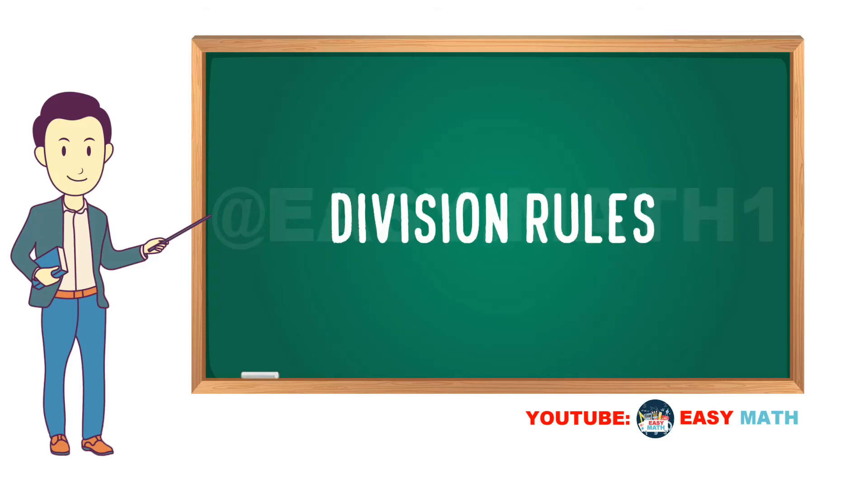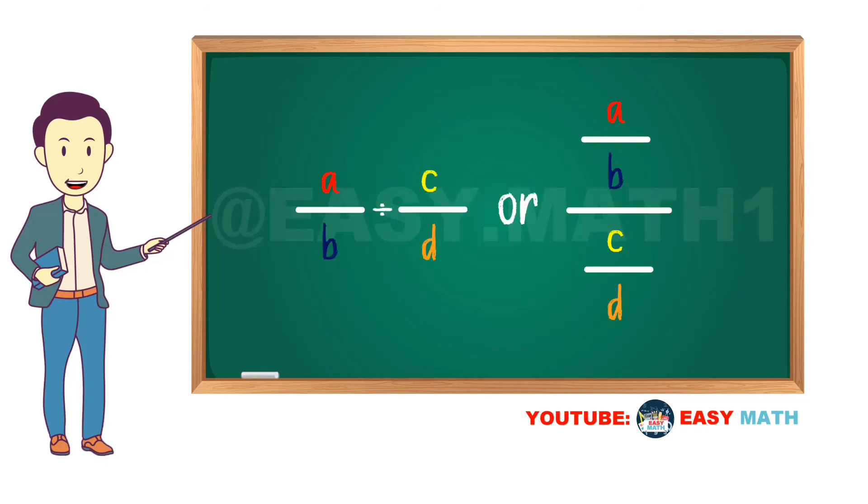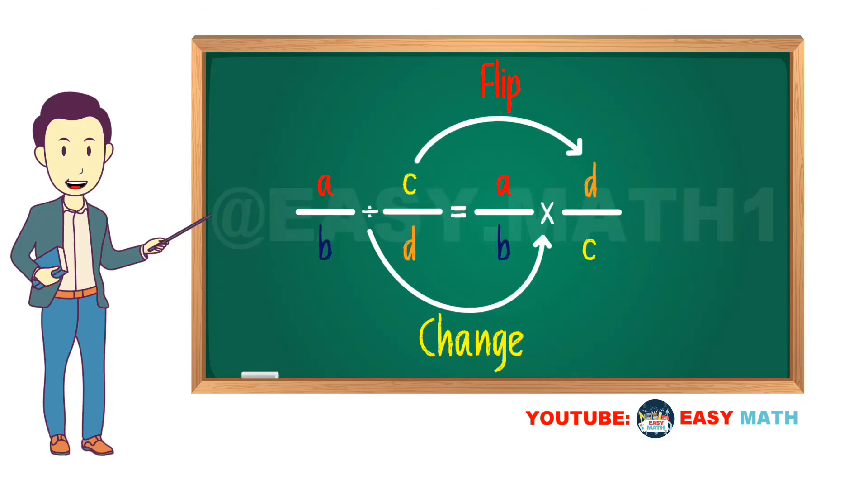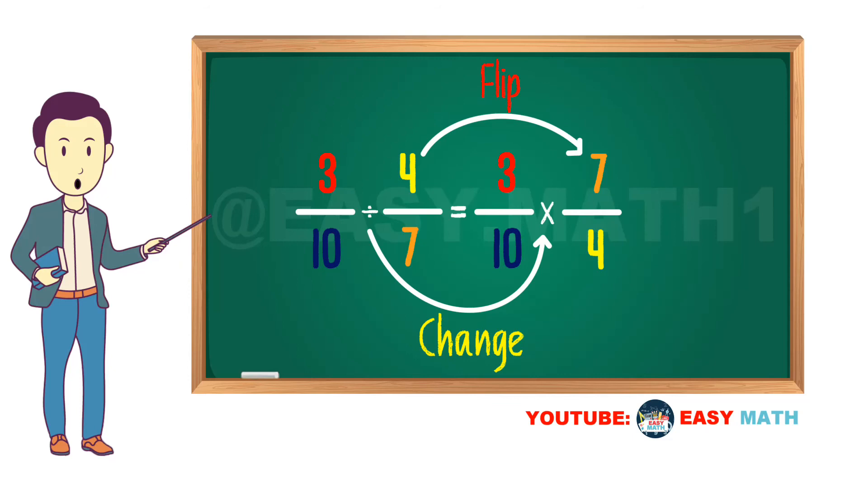Division rules. There are three division rules for fractions in math. Rule number one: A over B divided by C over D is equal to A over B times D over C equals AD over BC. For example, 3 over 10 divided by 4 over 7 equals 3 over 10 times 7 over 4 equals 21 over 40.